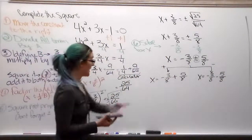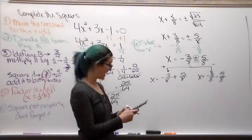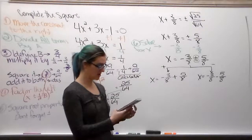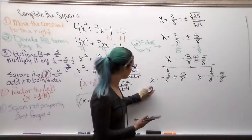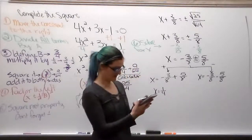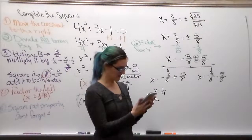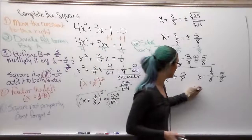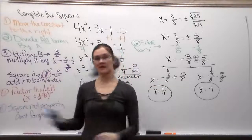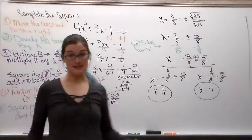Using the calculator for the first equation: -3 ÷ 8 + 5 ÷ 8, press Math, Enter, Enter — that gives 1/4. For the second equation: -3 ÷ 8 - 5 ÷ 8, press Math, Enter, Enter — that gives -1. So your two answers are x = 1/4 and x = -1. That shows you completing the square with the entire process.